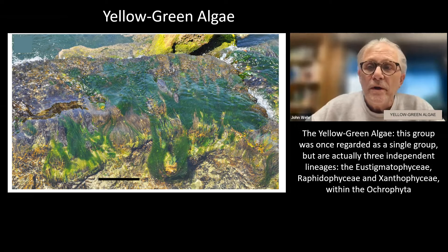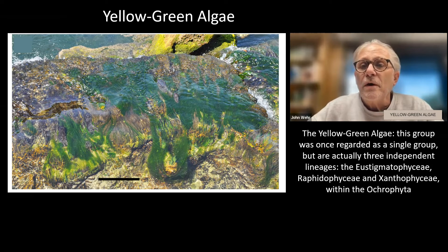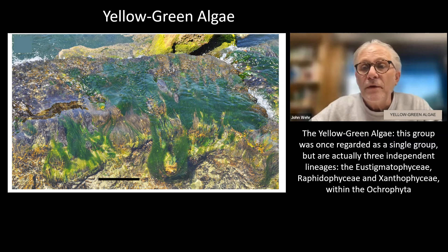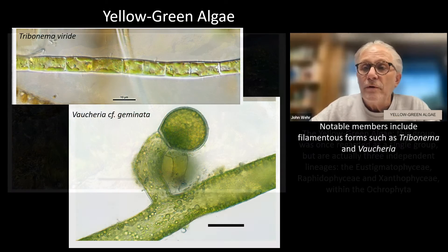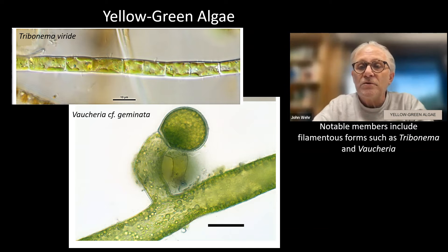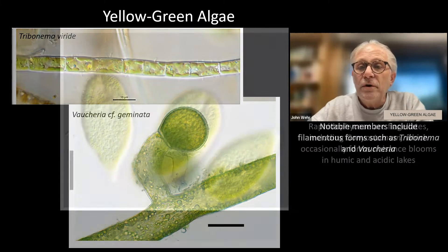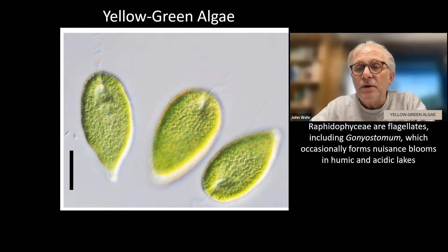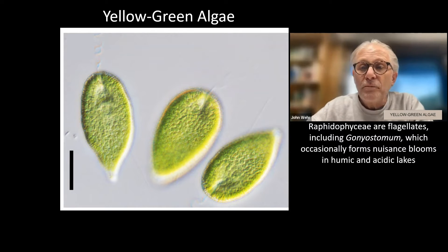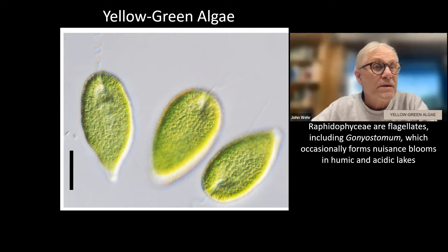The yellow-green algae were once regarded as a single group, but are actually three independent lineages: the Eustigmatophyceae, Raphidophyceae, and Xanthophyceae, within the Ochrophyta. Notable members include filamentous forms such as Tribonema and Vaucheria. Raphidophyceae are flagellates, including Gonyostomum, which occasionally forms nuisance blooms in humic and acidic lakes.